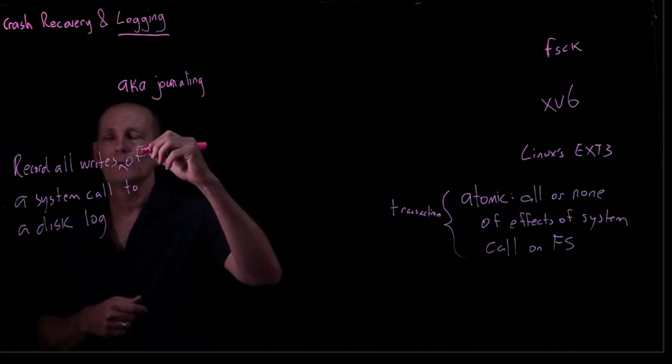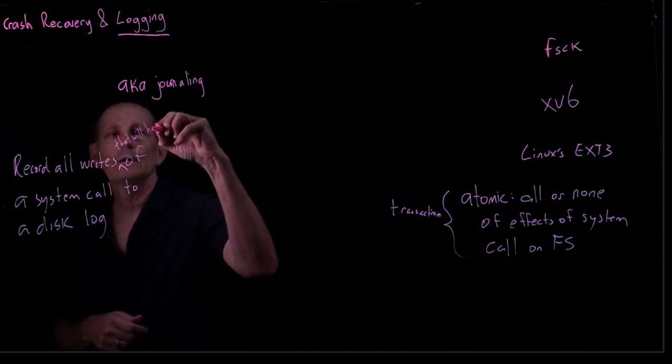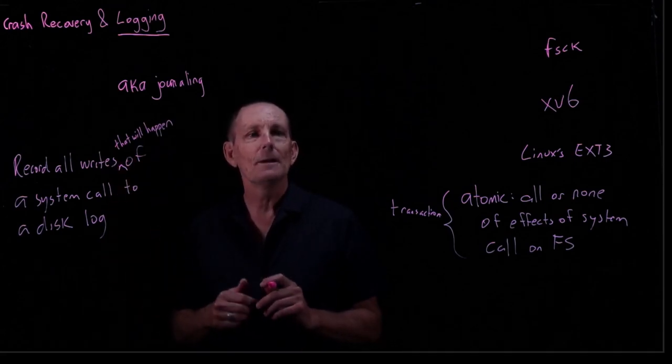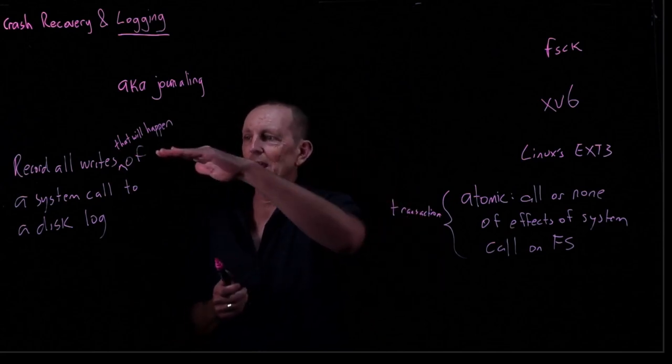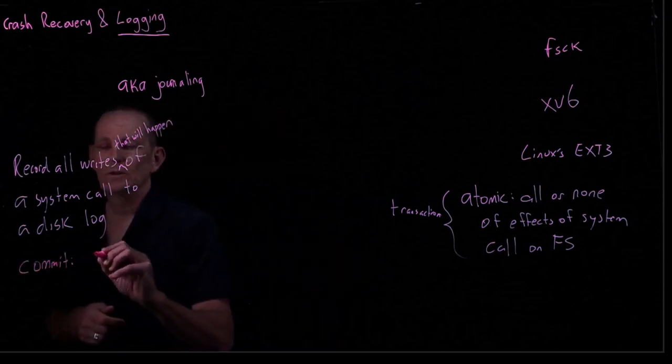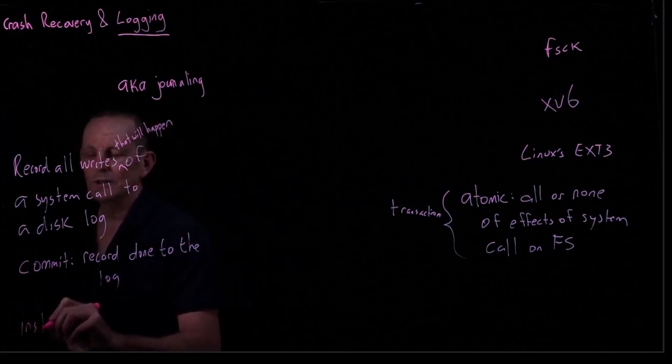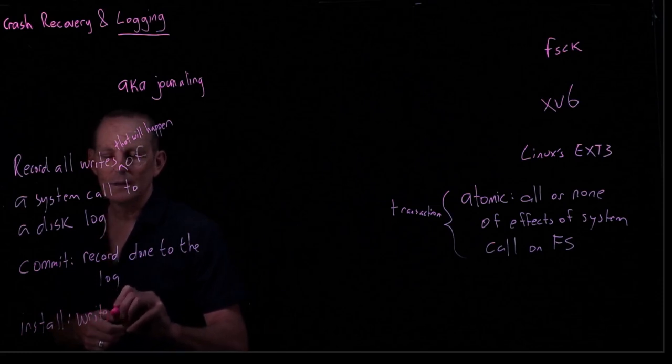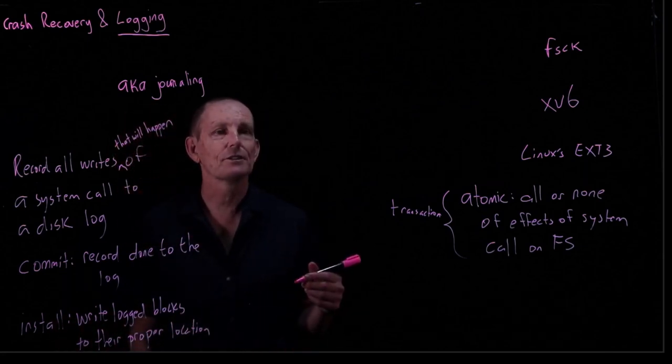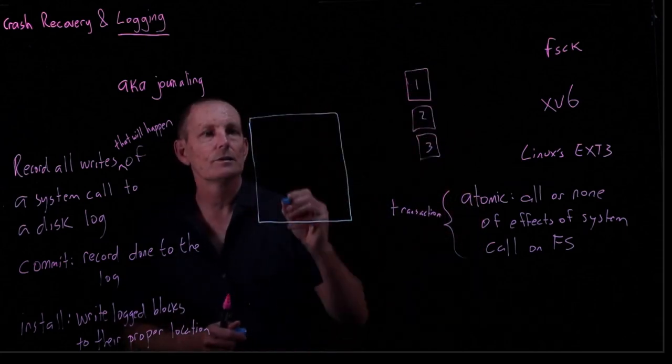So a disk log. And when I say record all the writes, what I really mean is record all the writes that will happen. Because we don't want to actually do the writing until we've logged it all. So instead of writing, actually write to the log. Once we're complete, then we go ahead and commit. The commit is we record done to the log. And then do what's called an install. That is write the log blocks to their proper location.